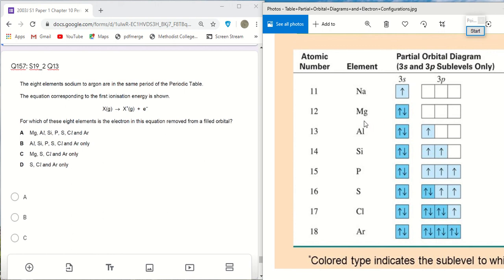Now magnesium, the first electron is removed from a 3s orbital and the 3s orbital is filled. So magnesium is one of the answers. Let's take magnesium.